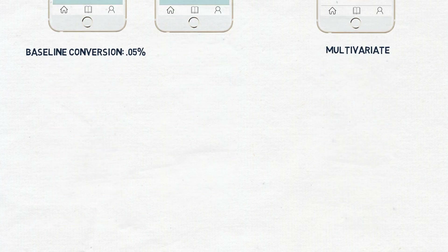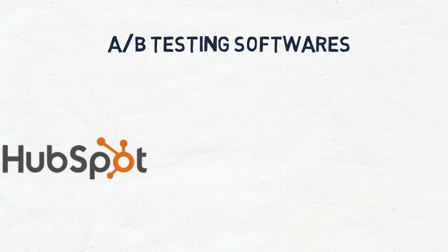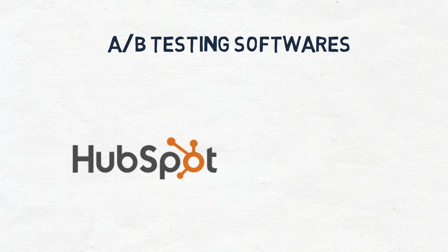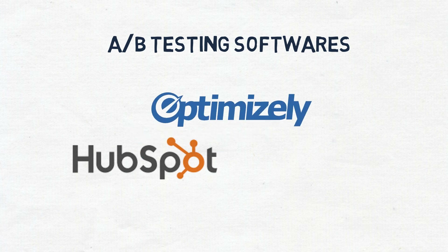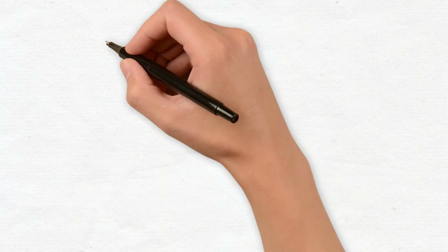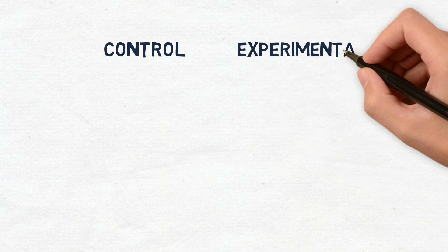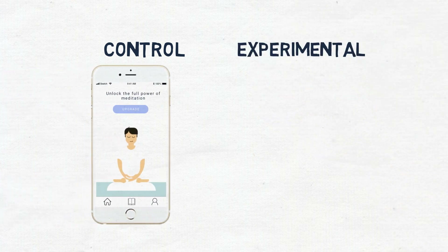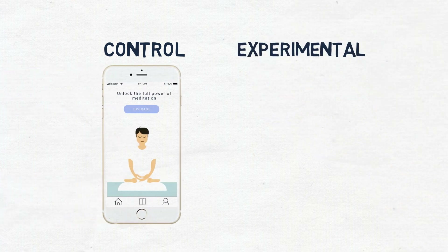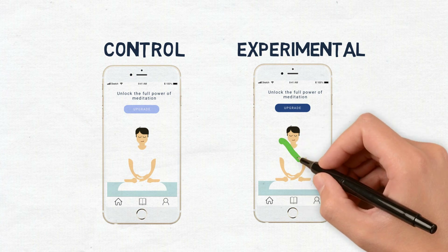Next, you should create variations of the design. You can use software to change the elements you are trying to test. Once it's live, the website visitors will be randomly assigned to one of the two groups — the control or experimental. Whichever software you use to conduct the A-B test will measure and review the analytics.